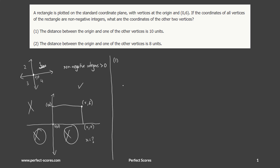Statement 1 says the distance from the origin to one of the vertices is 10. The two relevant vertices are (x, 0) and (x, 6). If the distance to (x, 0) is 10, then x = 10 directly, giving us all four vertices.